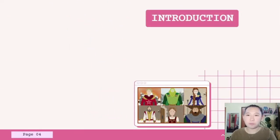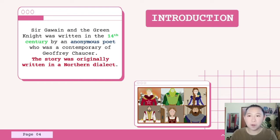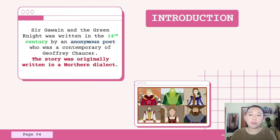Let's move on to the introduction of the poem. Sir Gawain and the Green Knight was written in the 14th century by an anonymous poet who was a contemporary of Geoffrey Chaucer. The story was originally written in a northern dialect. It tells the story of Sir Gawain's first adventure as a knight. This poem is considered one of the masterpieces of Middle English literature. It is a story of knightly deeds, sexual enticement, and a wild landscape, written in northwestern England in the late 14th century.